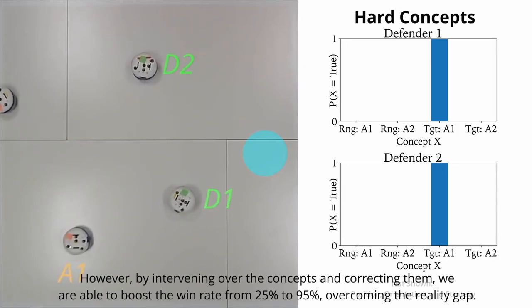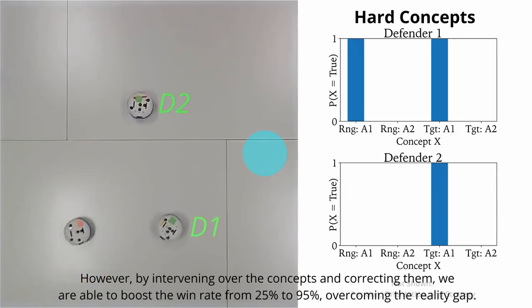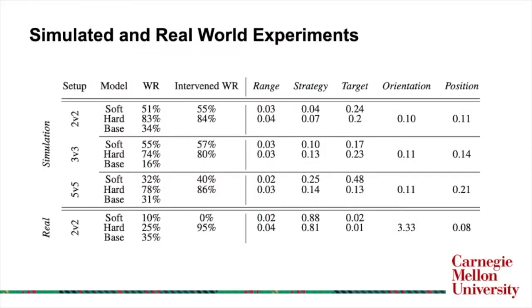However, now we see by intervening over the concepts and correcting them, we're able to boost the win rate from 25% to over 95%. Alright, now we'll move on to a set of more tabular results.